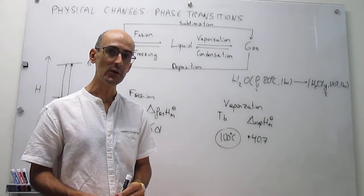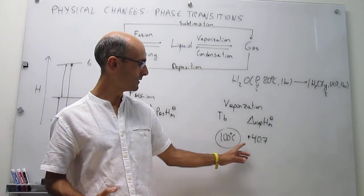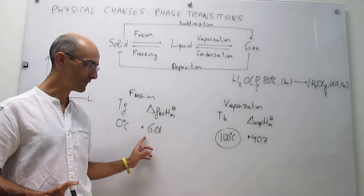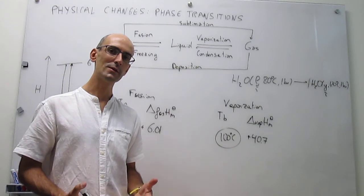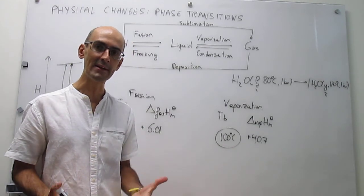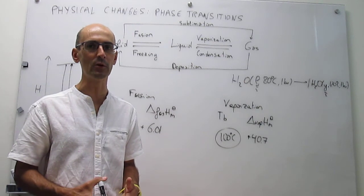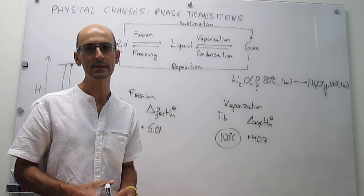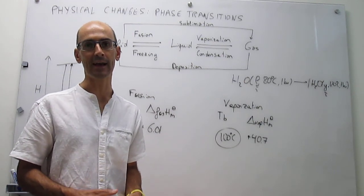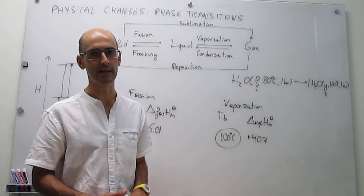In the next video, we're going to look at how these values for the enthalpy of phase transitions are actually determined for the denaturation of proteins or any other biopolymer. That employs something called differential scanning calorimetry, and that's going to be the body of the next video.